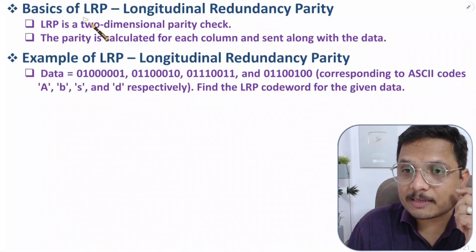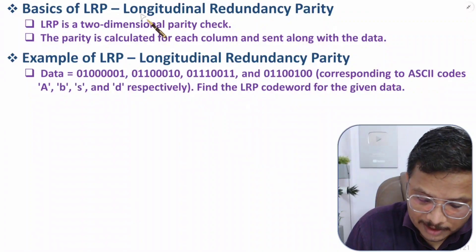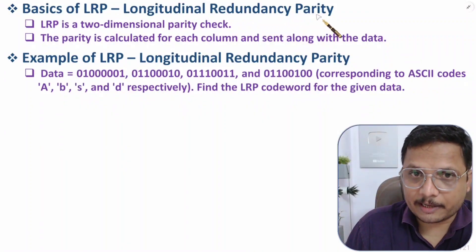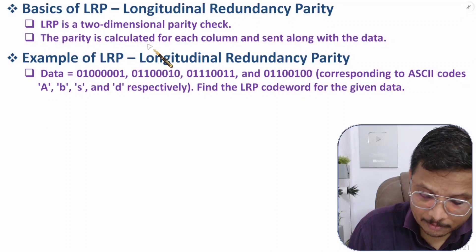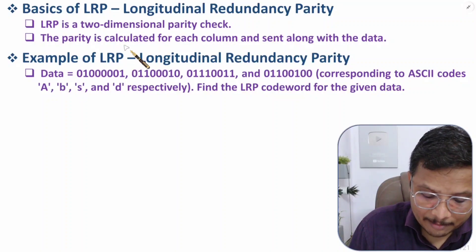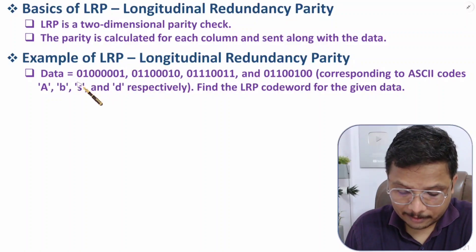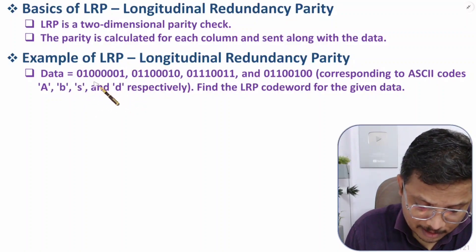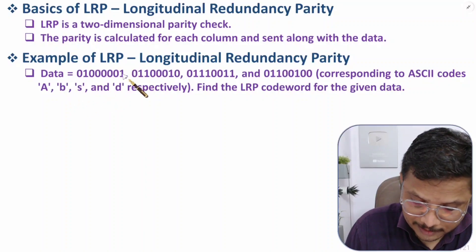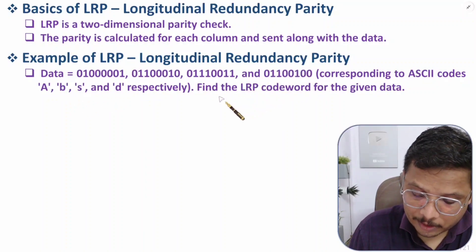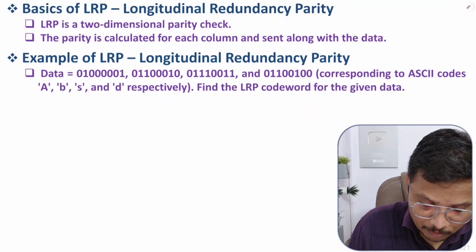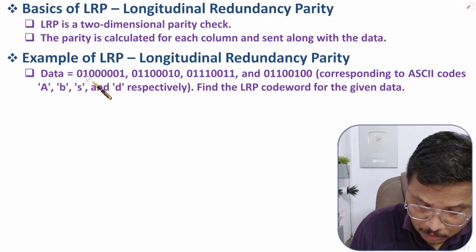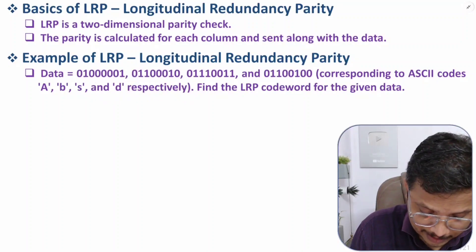Now I'll explain LRP. LRP is a two-dimensional parity check method; the full form is Longitudinal Redundancy Parity. Here, we calculate parity based on columns. Let me explain this with an example — we have some data arranged row and column wise, and we need to find the LRP codeword.